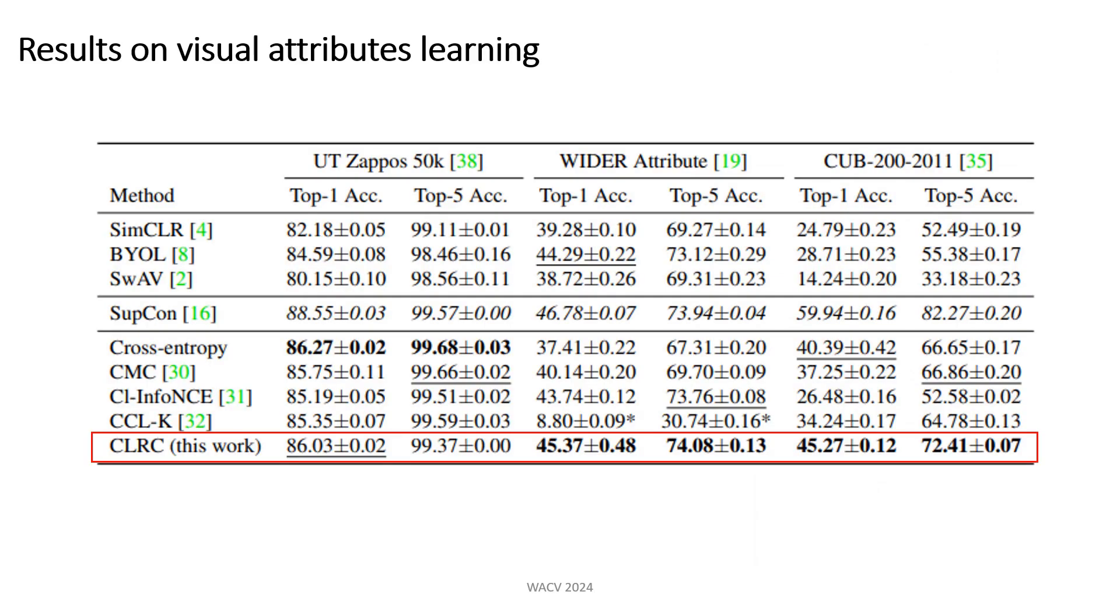In terms of performance in visual attribute learning, our approach attains the best overall performance in two out of three datasets with a substantial performance gain in the CUB dataset. Among the three datasets, the CUB dataset has the largest number of visual attributes of 312. The substantial performance gain in this dataset suggests that our proposed method is very effective in scaling to a large set of attributes.